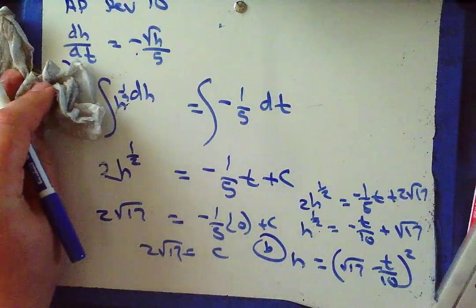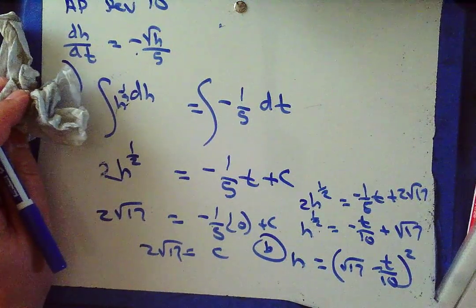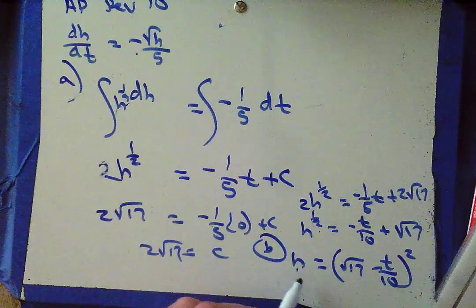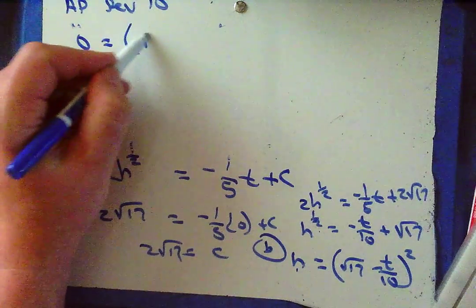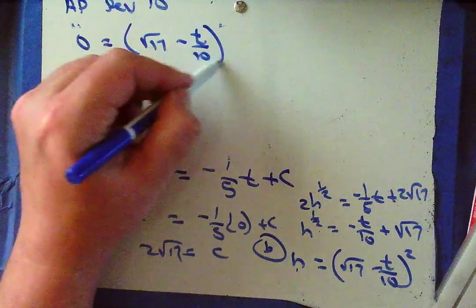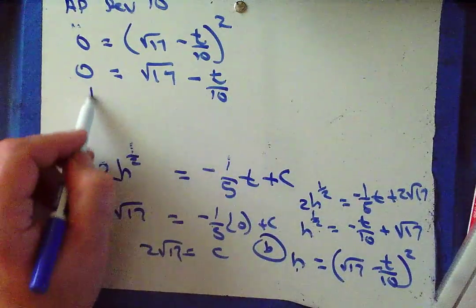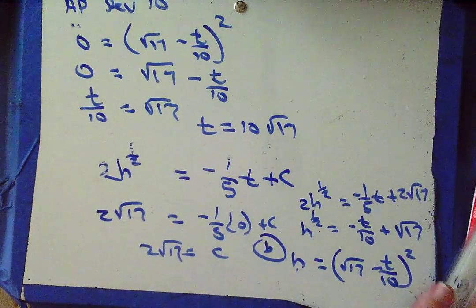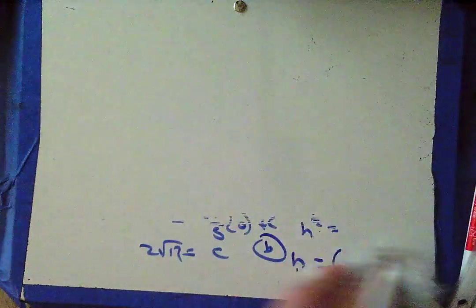What about part c? At what time is the coffee pot empty? I want to know when h equals 0. So 0 equals (√17 minus t/10)². Taking the square root of both sides: t/10 equals √17, or t equals 10√17. That's when the coffee pot is empty. They don't ask me to justify — they just ask for a time. I've given them a time. There's problem number one.